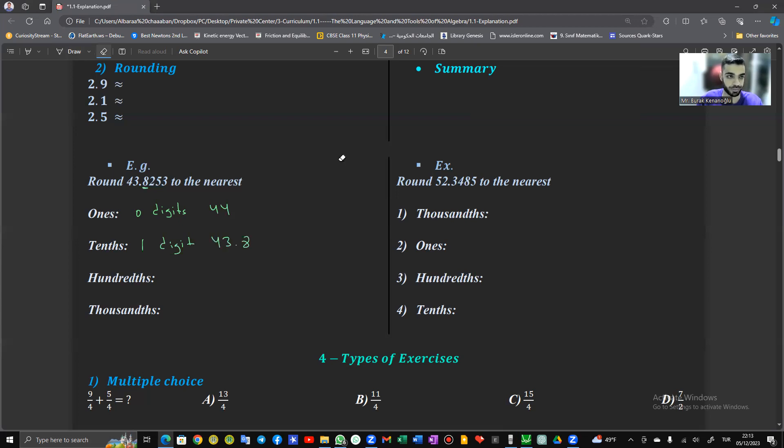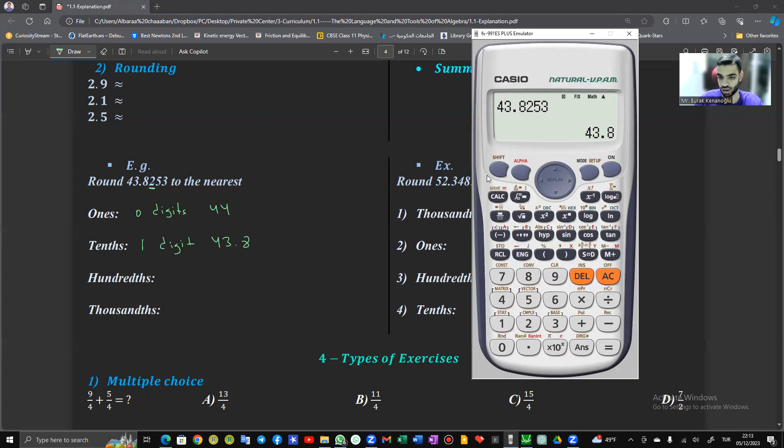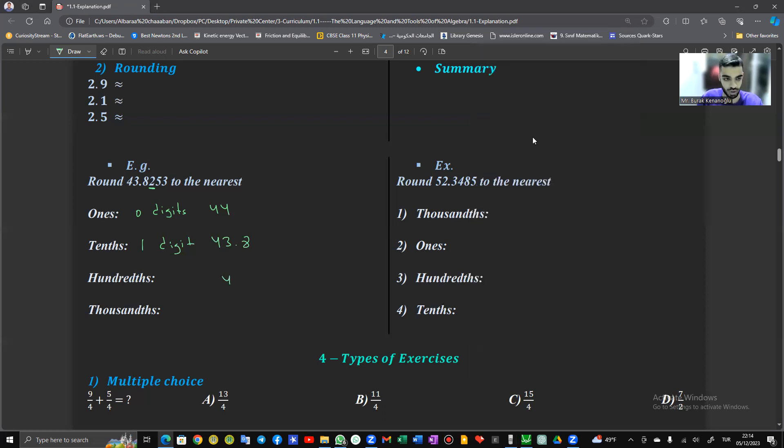The next one, the hundredths. The hundredths is the two. So here we have two digits. Now we don't need to write the number again. Just we click on shift mode fix. Here we have how many digits? Two digits. We click on two. So here we have two digits. It's forty-three point eighty-three. You have two digits.